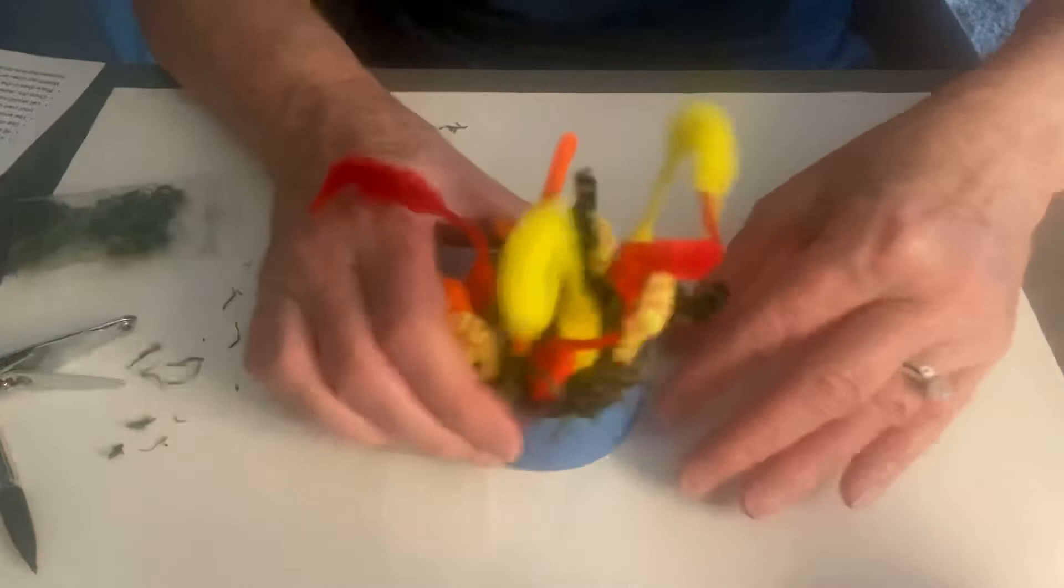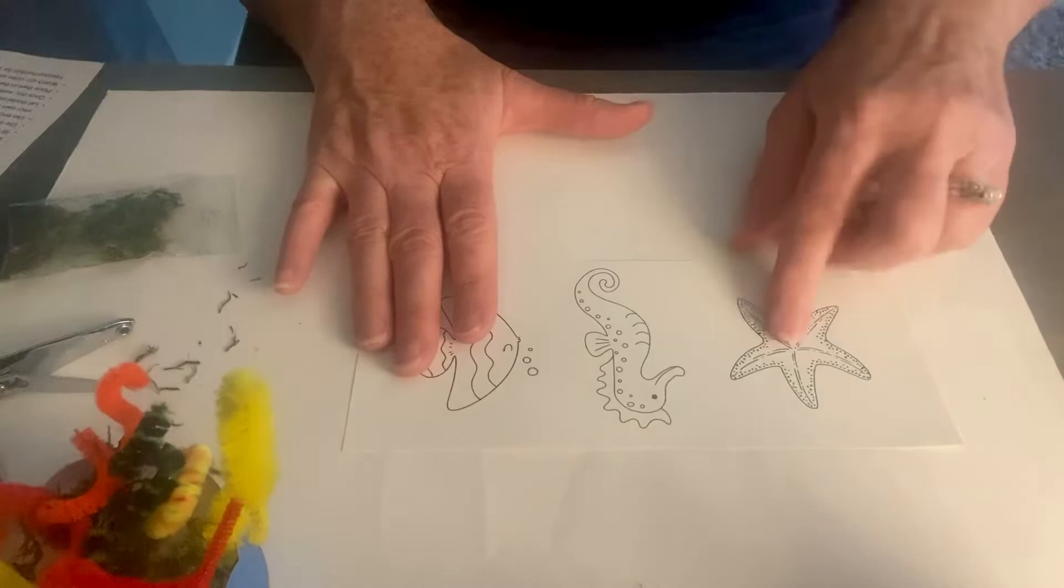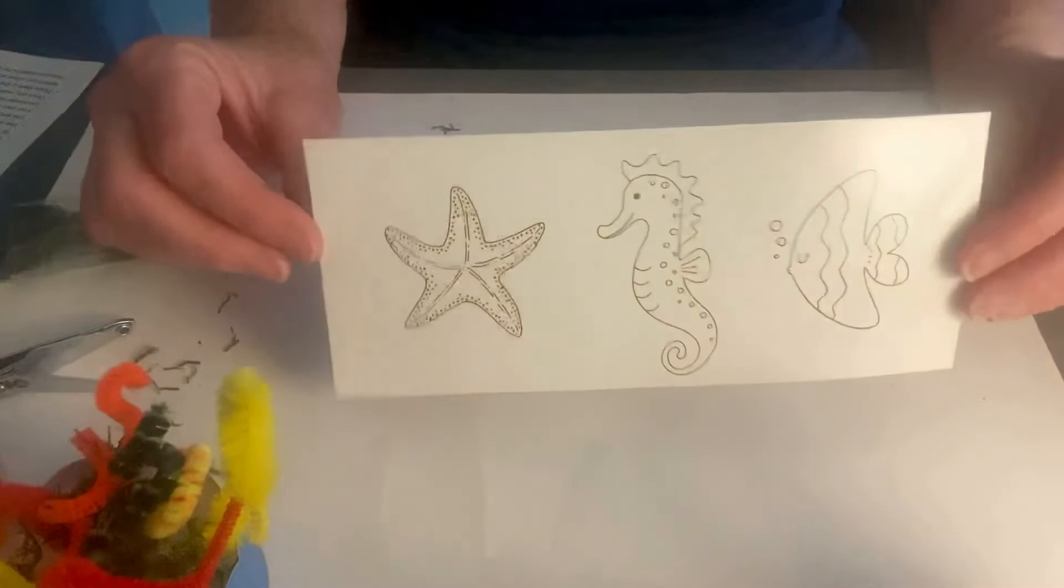And the next part is to go ahead and make some sea creatures that live underneath the water. And you can make your own sea creatures out of the model magic. You can make little fish, starfish, whatever you want.